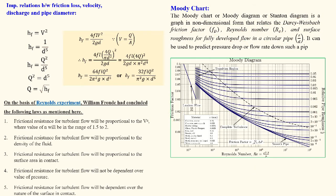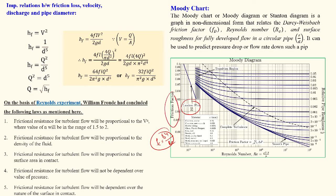In the Modi chart, when the Reynolds number is up to about 2000, this region is the laminar flow region, where fc = 64 / Re. Beyond this is the transition region, where flow changes from laminar to turbulent. After the transition region, the rest of the chart represents the turbulent flow region.